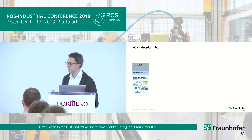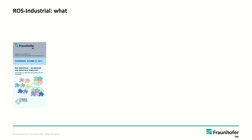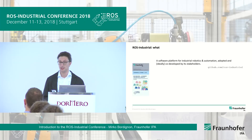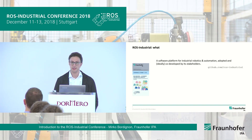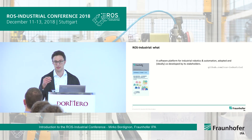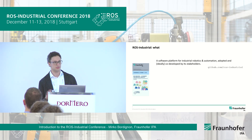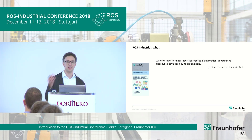So, the 'what', if you wish — the initial event now six years ago was ROS Industrial: an enabler for industrial robotics, question mark. Well, we can consider it an enabler, very concretely, as a software platform for industrial robotics and automation — adopted and ideally co-developed by its stakeholders. Some of the talks in the next days, actually today as well, and then tomorrow, will touch upon this co-development, how you can get involved, how some of you — be it hardware OEMs, be it system integrators — are co-developing with us.